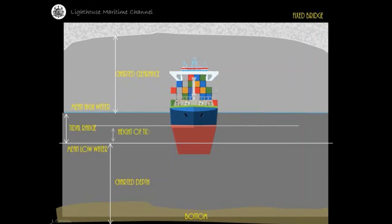Height of Tide is the vertical distance from the chart sounding datum to the water surface at any stage of tide. Actual depth is charted depth added by the height of tide at any given time.